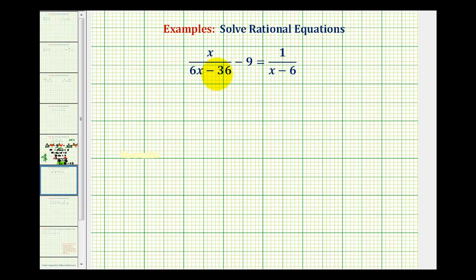To do this, we want to multiply both sides of the equation by what would be the least common denominator. So the first step is to write each fraction and make sure the denominator is in factored form.